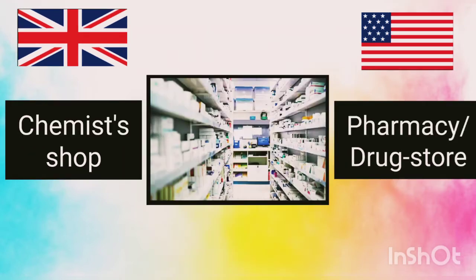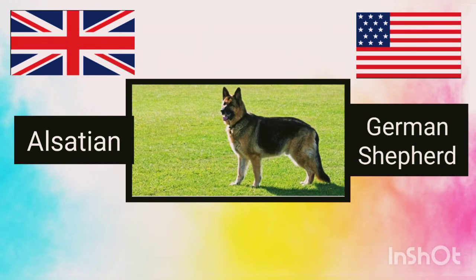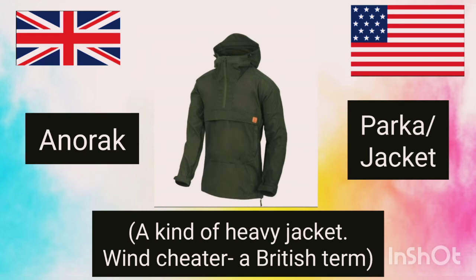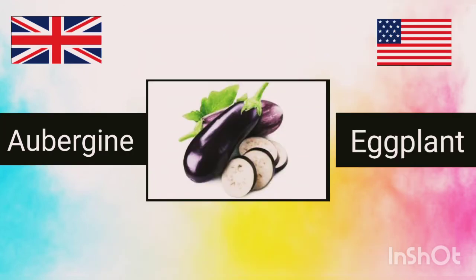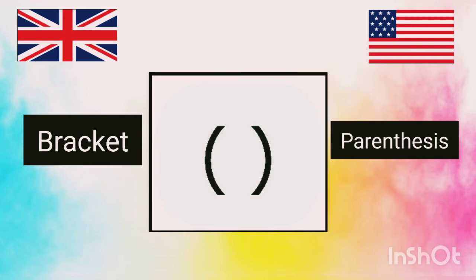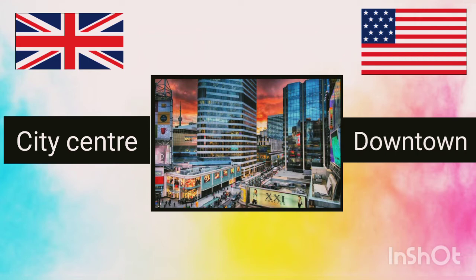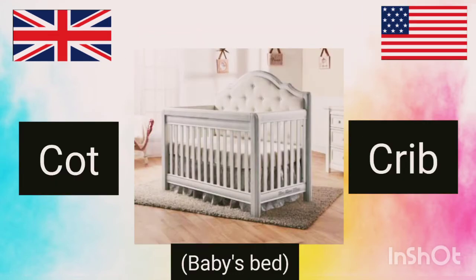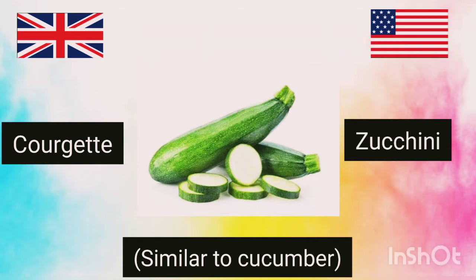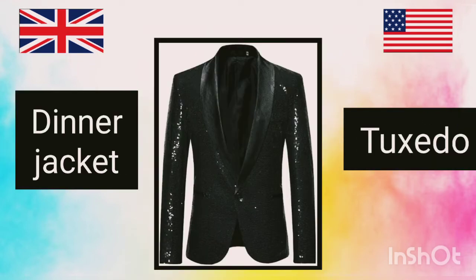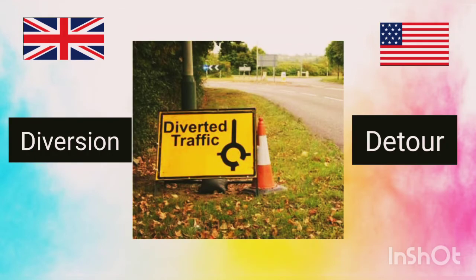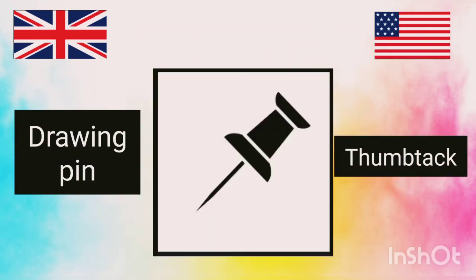Chemist shop / pharmacy or drugstore. Alsatian / German shepherd. Anorak / parka or jacket. Aubergine / eggplant. Bracket / parenthesis. City centre / downtown. Cot / crib. Courgette / zucchini. Dinner jacket / tuxedo. Diversion / detour. Drawing pin / thumbtack.